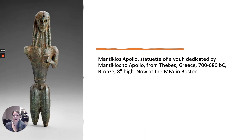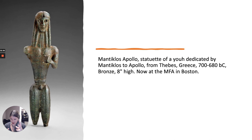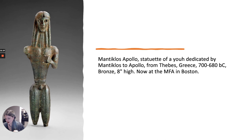Another sculpture from this period is the Manticlos Apollo — a statuette of a youth dedicated by Manticlos to Apollo. We've seen this kind of dedicational figure in a lot of other cultures — the Cycladic statues, Egypt, the Fertile Crescent. But this one is interesting because there's writing on his legs — an actual written dedication to the god Apollo. The name of the artist, Manticlos, is etched and carved into the thighs of this figure as a dedication.